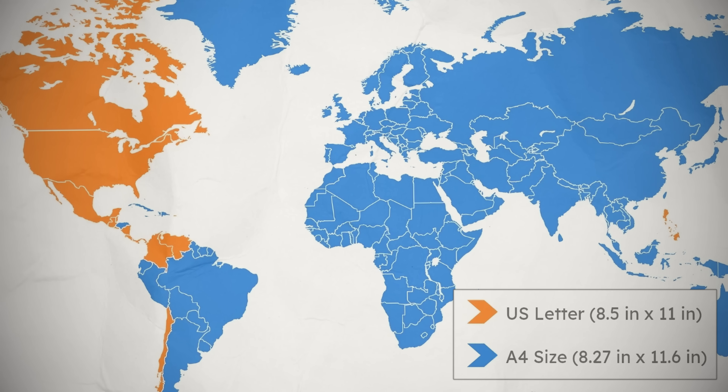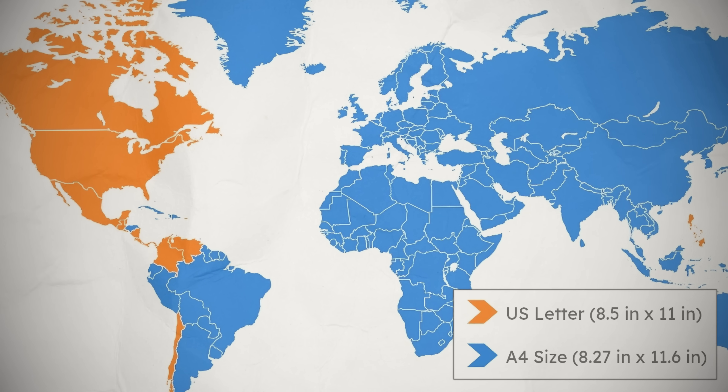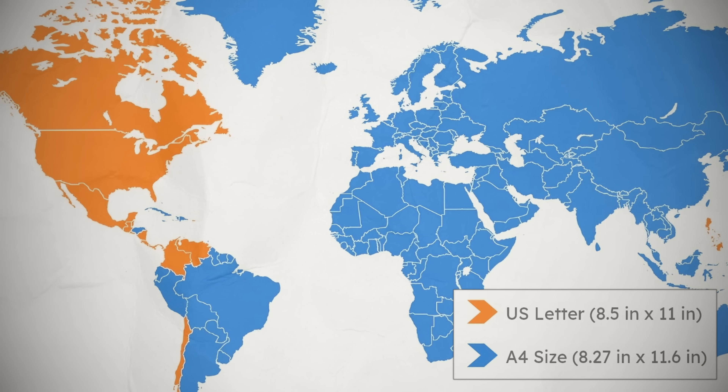This is an A4 paper sheet and it's the standard paper size for everywhere in the world. But this is a US letter paper sheet, which is the same thing but in the United States. Only a handful of countries follow this US model — the US of course, but then also Canada, Mexico, Chile, Colombia, Venezuela, Central America, and the Philippines. And along with their difference in paper sizes, they're also different in so many other ways that they measure things compared with other countries across the world.